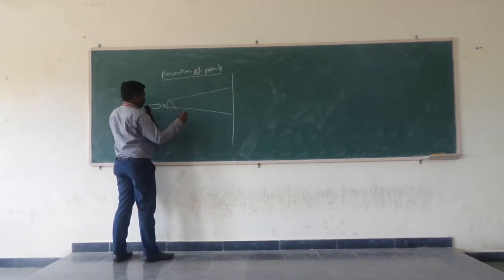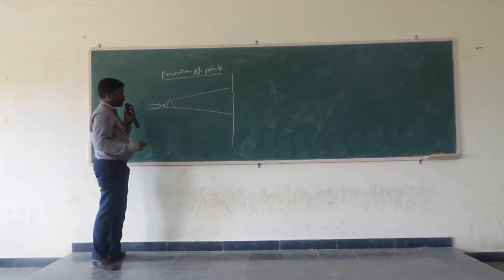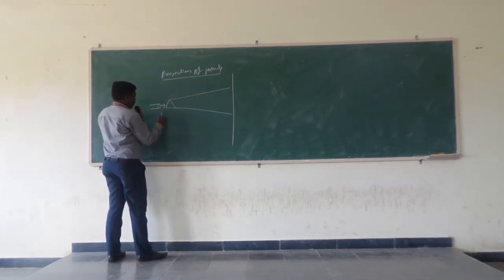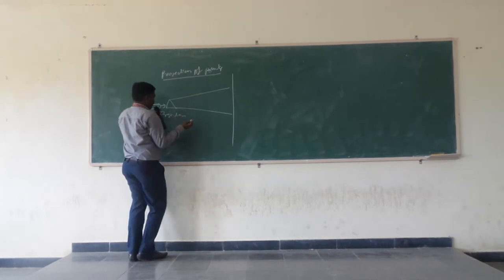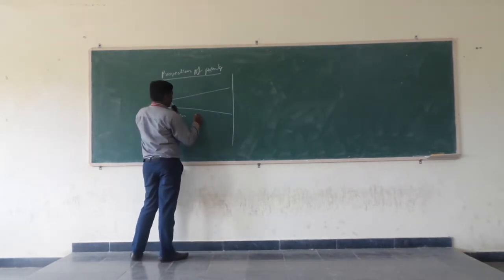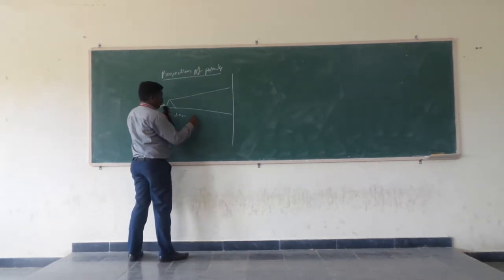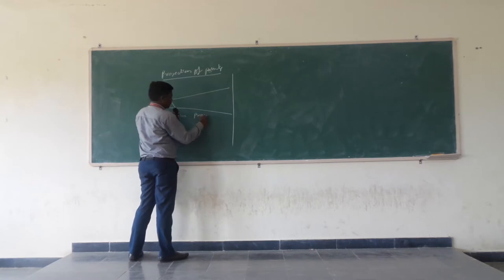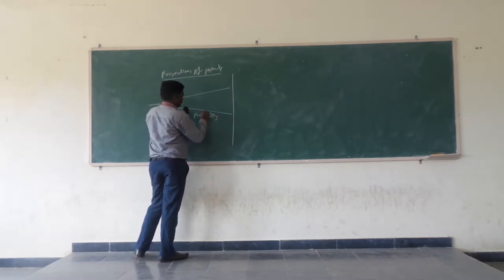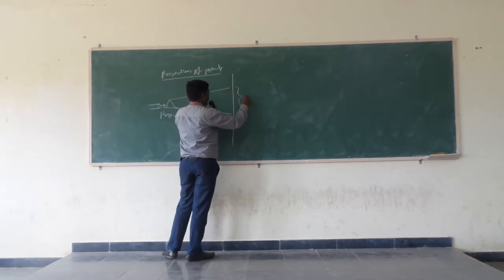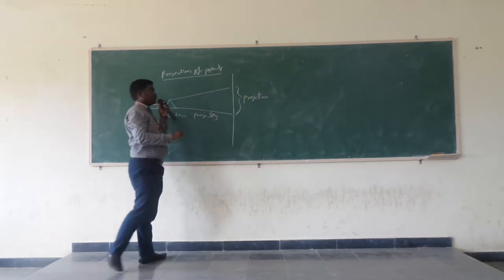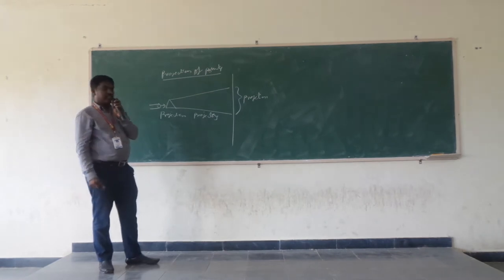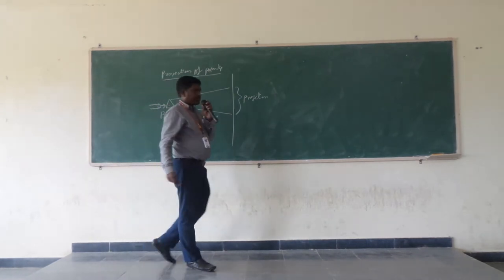These lines are called projectors. So basically, the projection should be divided into three parts: one is the projection, another one is the projector, and the third one is the projectors. This is called the final projection. So before going to look at the projection of points, we need to know about quadrants.